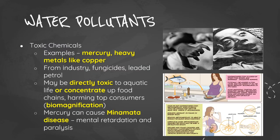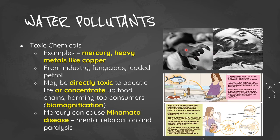Toxic chemicals such as mercury and copper also act as water pollutants, coming from industries, fungicides, and leaded petrol. They may be directly toxic to aquatic life or concentrate through food chains, harming top consumers including birds, mammals, and humans. This is called biomagnification. Mercury can cause itching, excess sweating, skin discoloration, mental retardation, paralysis, and inability to control muscles.